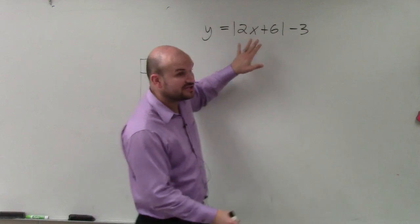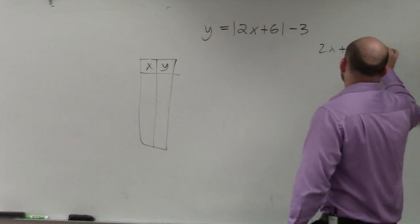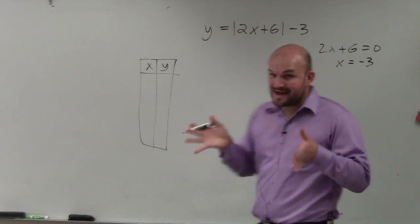So we remember the axis of symmetry is what's inside of our absolute value. We're going to set that equal to 0. So I already did this work. I'm just going to quickly state that this equals negative 3. So that's my axis of symmetry.